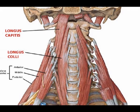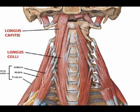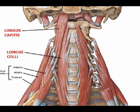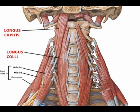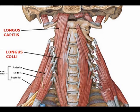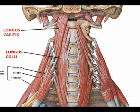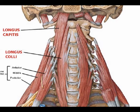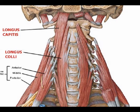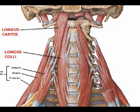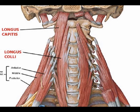The longus cervicus, also known as the longus coli, originates on the anterior vertebral bodies of T1 and T3 and the anterior tubercles of the transverse processes of C3 through C7. It inserts in the anterior arch of the atlas and the anterior aspect of the vertebral bodies of C2 through C4. Its concentric action when contracted bilaterally is cervical flexion.